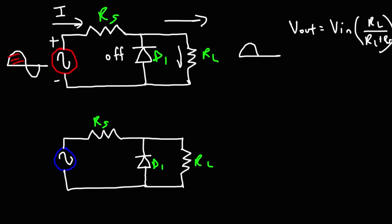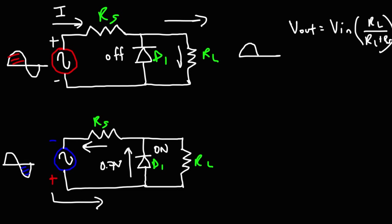Now let's talk about what's going to happen during the negative half cycle of the sine wave. During the negative half cycle, current is going to flow in the other direction. This time diode D1 will be on, and the voltage drop of a silicon diode is 0.7 volts, so that's going to be the voltage across the load resistor. So the output will have a waveform clipped at negative 0.7 volts.